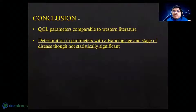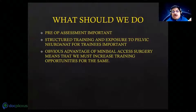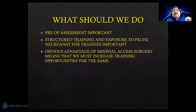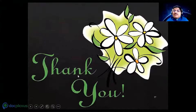Quality of life parameters are comparable to western literature, with deterioration in advancing age and stage, though not statistically significant. As surgeons, we should conduct pre-operative assessment for LARS risk, have structured training in pelvic neuroanatomy, and increase exposure to minimal access surgery. We talk to residents about ureter preservation and vascular control, but rarely about nerve preservation — yet this matters enormously in a young patient population. Laparoscopic surgery has an obvious advantage and the IAGS organization should work to improve penetration of laparoscopic surgery, which currently remains very low in India.